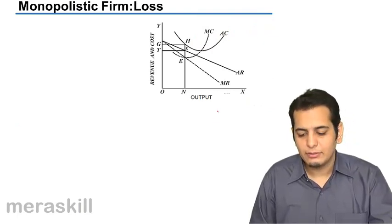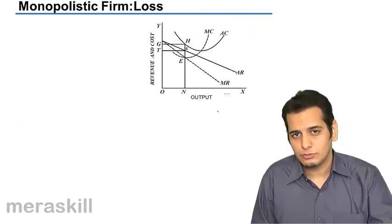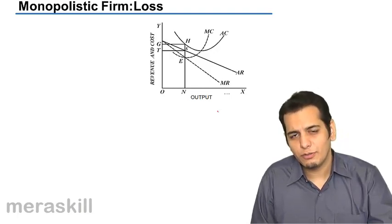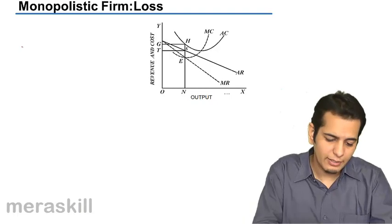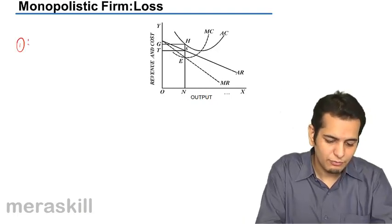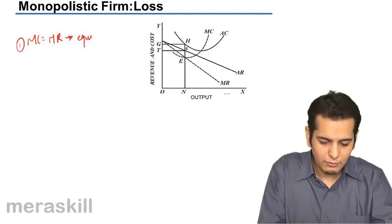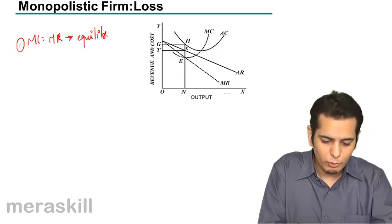Now, let's see the case for loss. In what condition will a monopolistic firm incur losses? Again, our condition remains the same. First, MC equals to MR will give you equilibrium point.